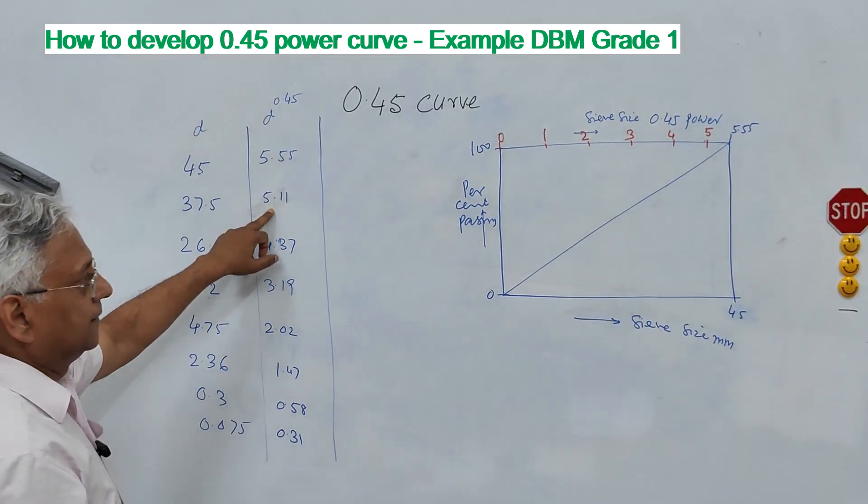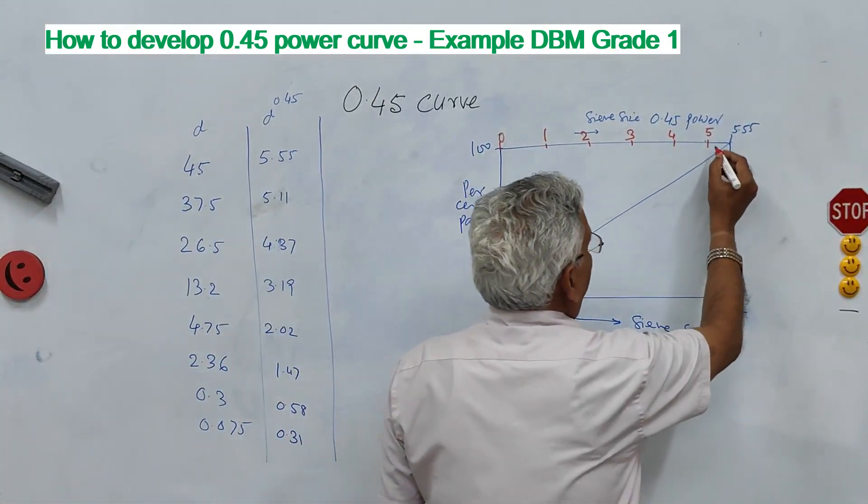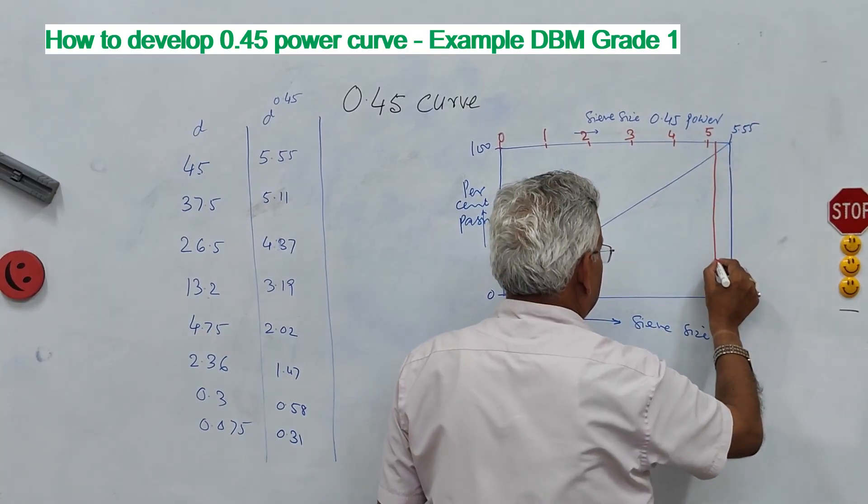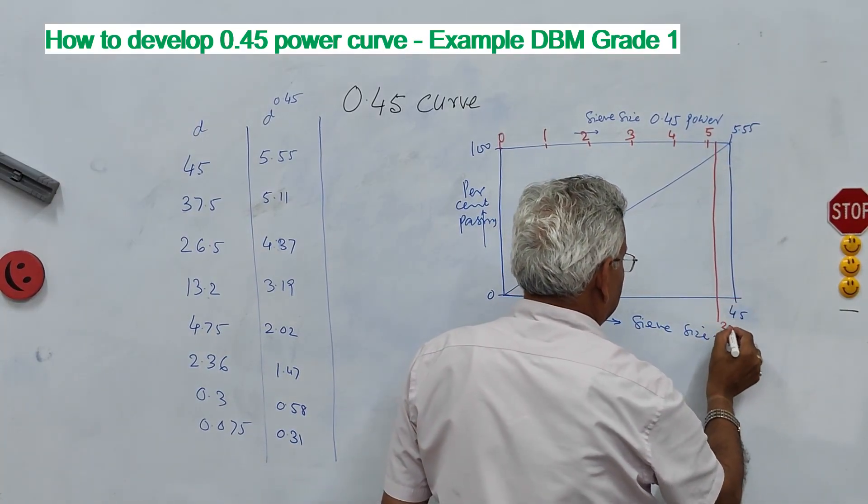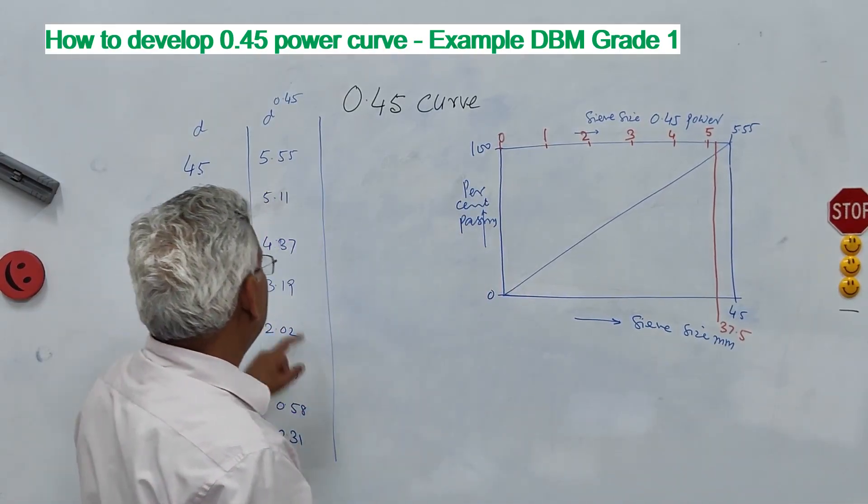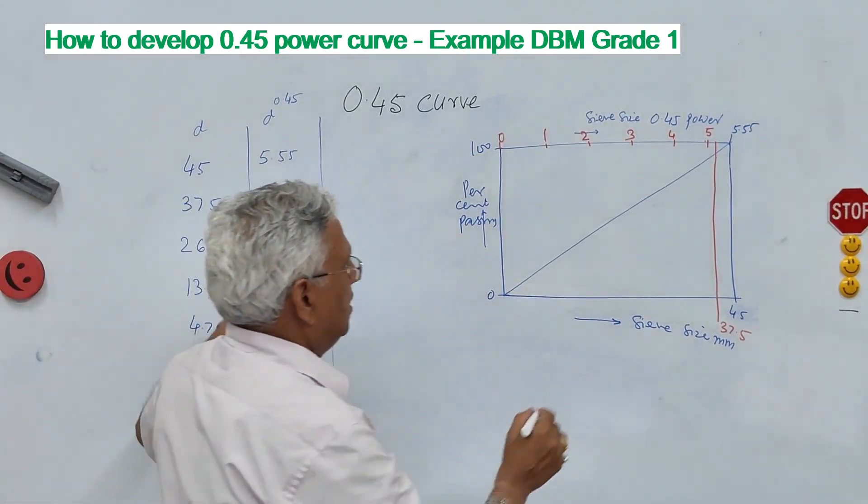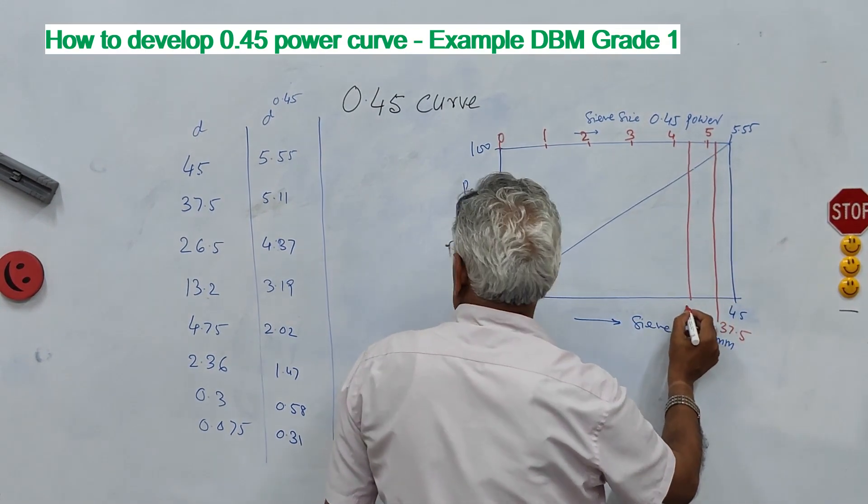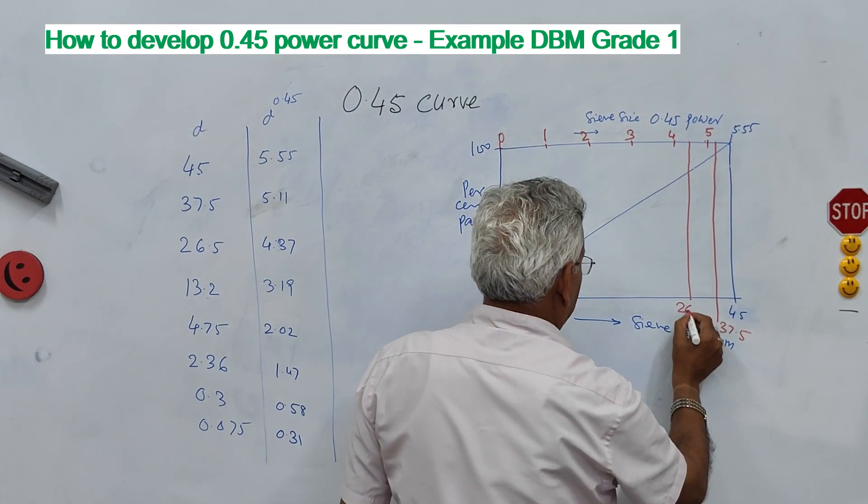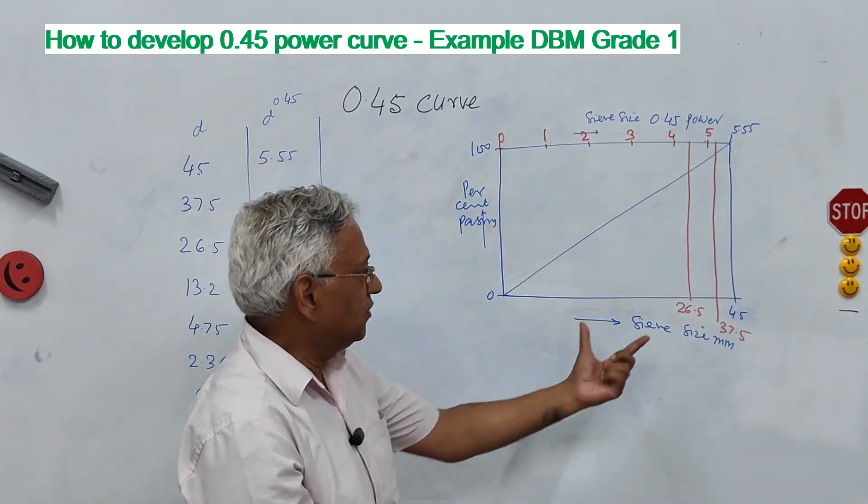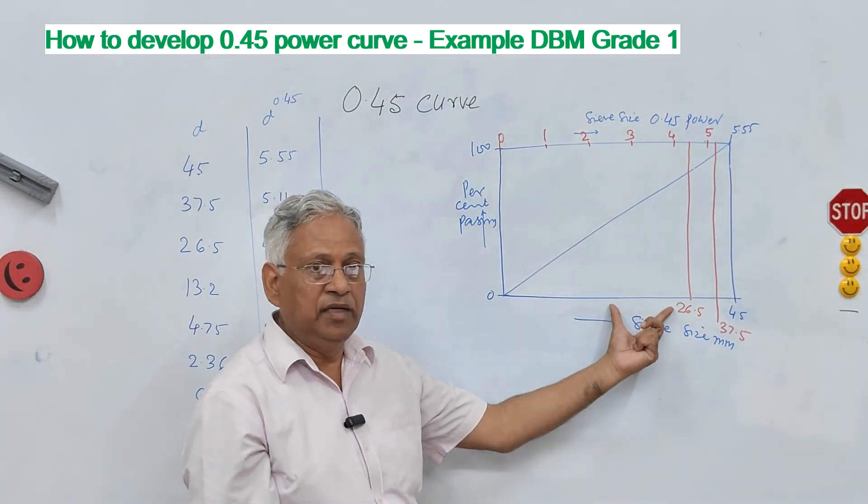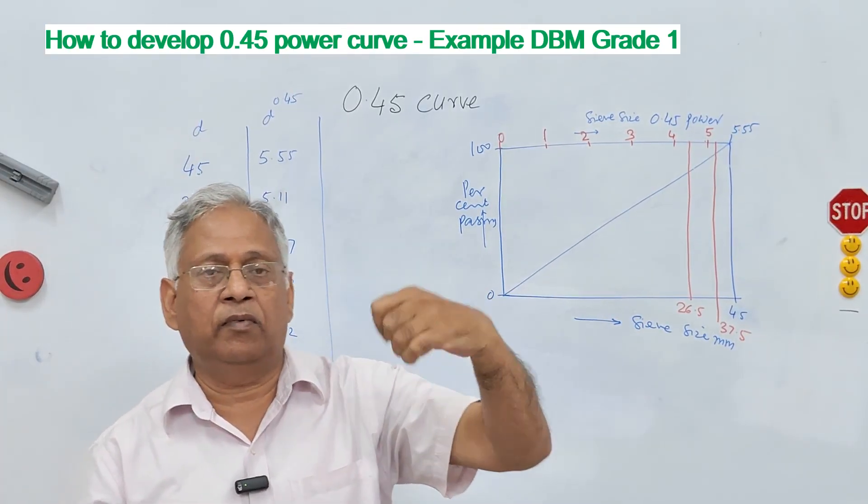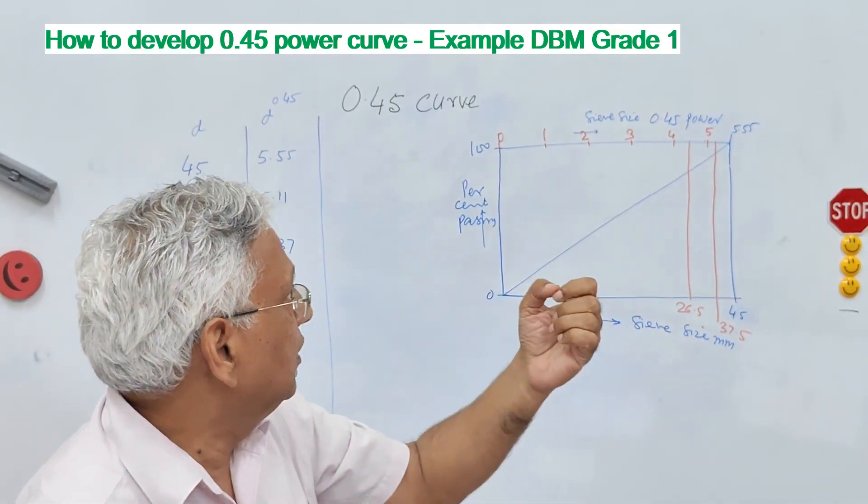5.11, this size 5.11 somewhere here, if you drop a perpendicular here this is the size 37.5. 4.37 here, 4.37 is the size which is 26.5. That is how you can generate the sieve size in millimeter on x-axis. On secondary axis you have the sieve size raised to 0.45.